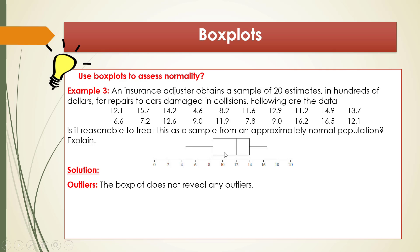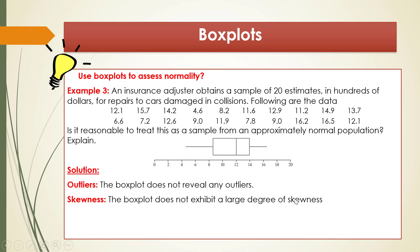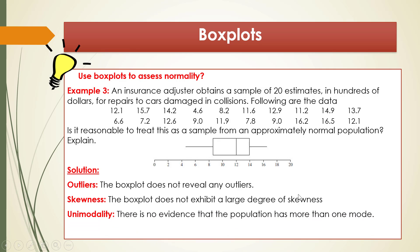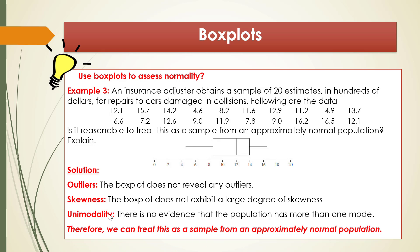The box plot looks slightly skewed but it's not strongly skewed, so the box plot does not exhibit a large degree of skewness. There is no evidence that the population has more than one mode. Usually, box plots fail to examine unimodality. So we can treat this as a sample from an approximately normal population because there is no sign of non-normality.